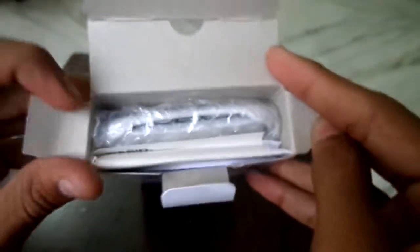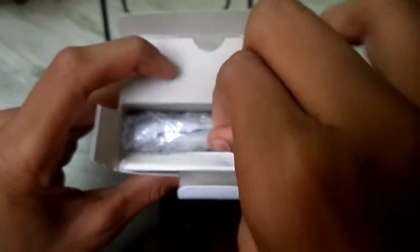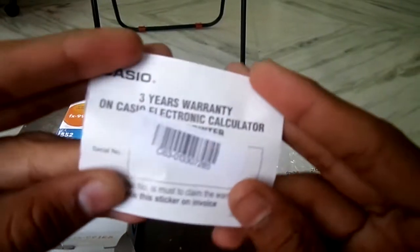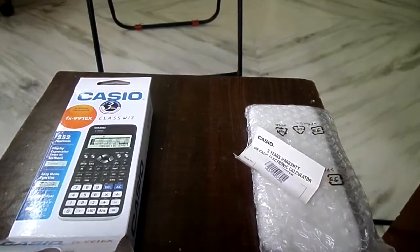Inside the box we can see a couple of things. One is the ClassWiz covered in the bubble wrap. Let's see it later and a 3 years limited warranty sticker which is to be pasted on the bill.